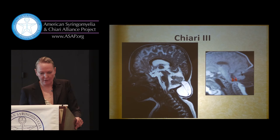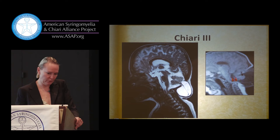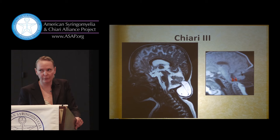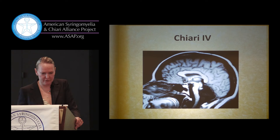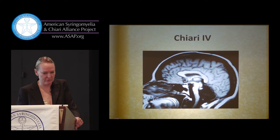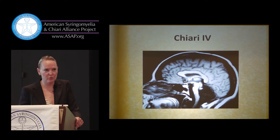Chiari 3 is the rarest — less than 1% of cases — presenting with a big herniation of cerebellar contents and sometimes brainstem coming out of occipital or cervical pouches. If the baby is viable, this has to be treated promptly after birth. Chiari 4 is the most severe — there's just a missing posterior fossa. On MRI, where CSF spaces look black, you see that there's really nothing there, and instead of a nice round posterior fossa you just have a flat funnel-shaped structure. Most babies with Chiari 4 do not survive infancy.